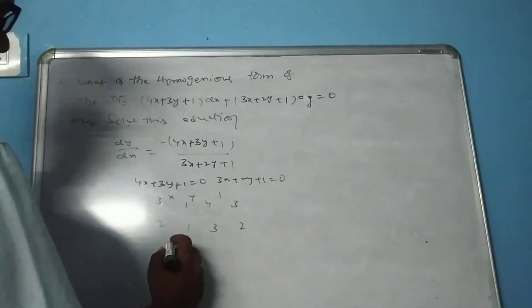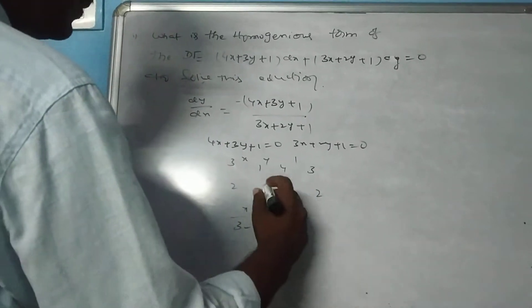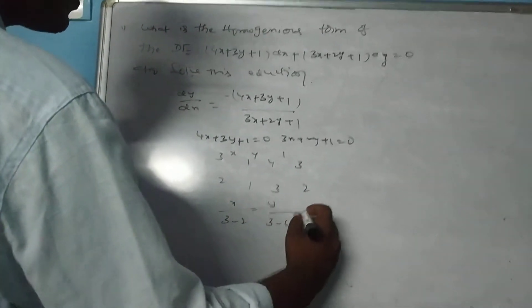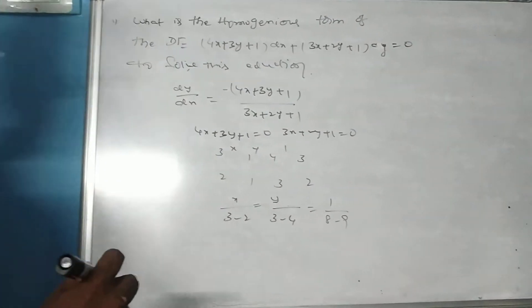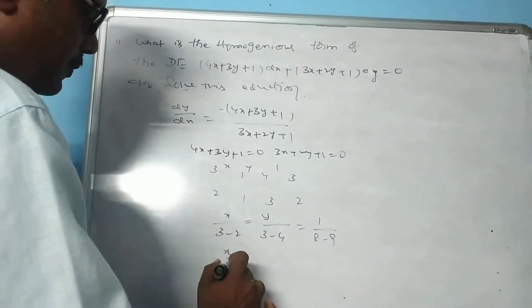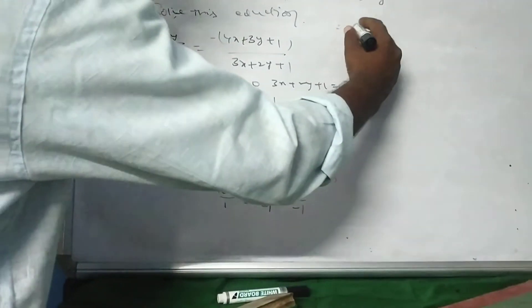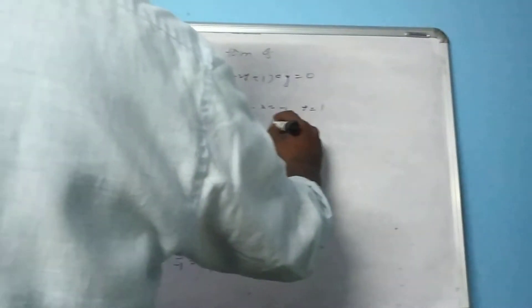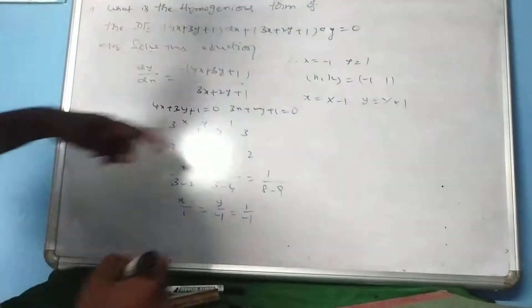By cross-multiplication: x by (3 minus 2) equals y by (3 minus 4) equals 1 by (8 minus 9). Therefore x equals x by 1 and y by minus 1 equals 1 by minus 1. So x equals X minus 1 and small y equals capital Y plus 1.